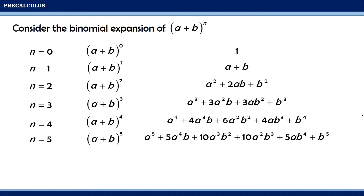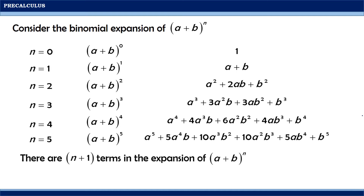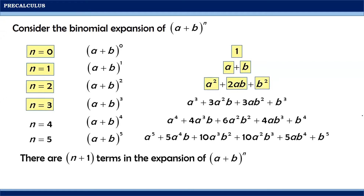From this set of examples, we may notice the following. There are n + 1 terms in the expansion of (a + b)^n. Meaning, if n is 0, there is 1 term; if n is 1, the expression has 2 terms; if n is 2, there are 3 terms; and if n is 3, there are 4 terms, and so on.